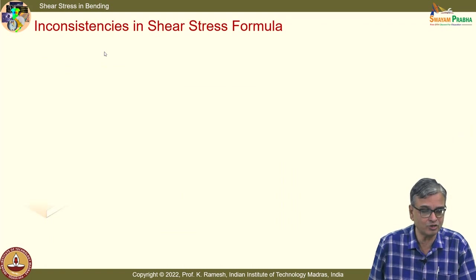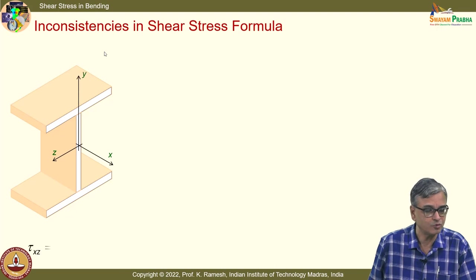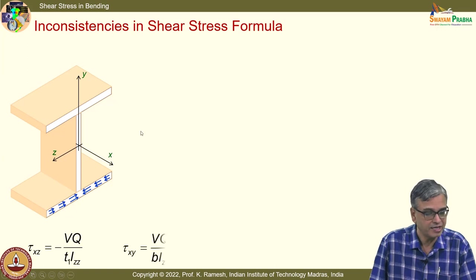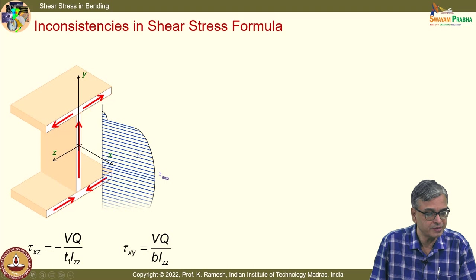We have also looked at the inconsistencies in the shear stress formula at junctions. Nevertheless, we use these expressions because we get reasonably useful numbers. From the free surface concept, the flange tip should have zero stress, but the shear stress formula does not give that. In the transition region, you take the flange length and get a smaller magnitude; the moment you go to the web, suddenly the stress magnitude increases — that is correct.